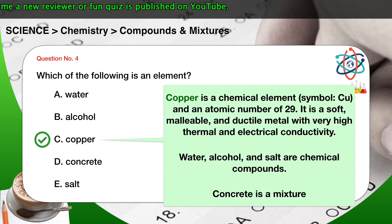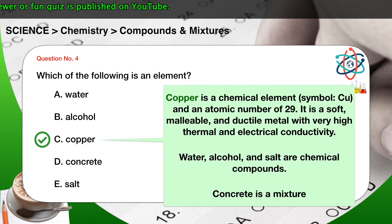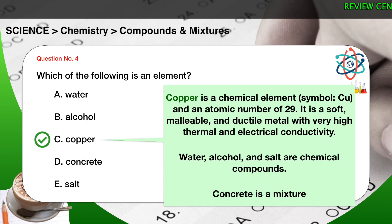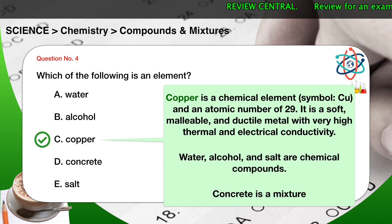The correct answer is C. Copper is a chemical element with an atomic number of 29. It is a soft, malleable, and ductile metal with very high thermal and electrical conductivity. Water, alcohol, and salt are chemical compounds. Concrete is a mixture.